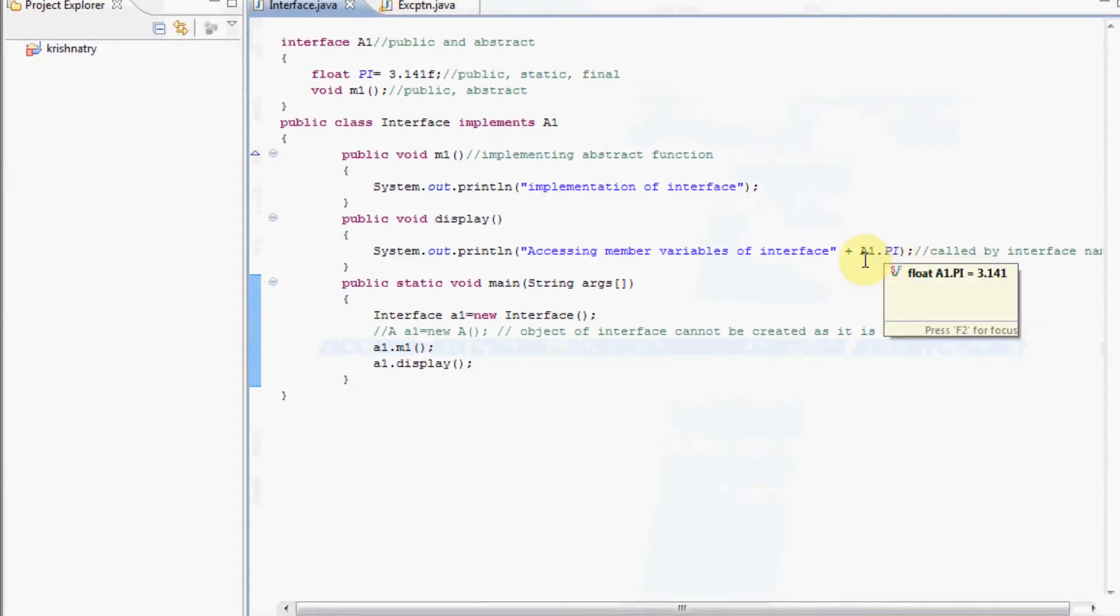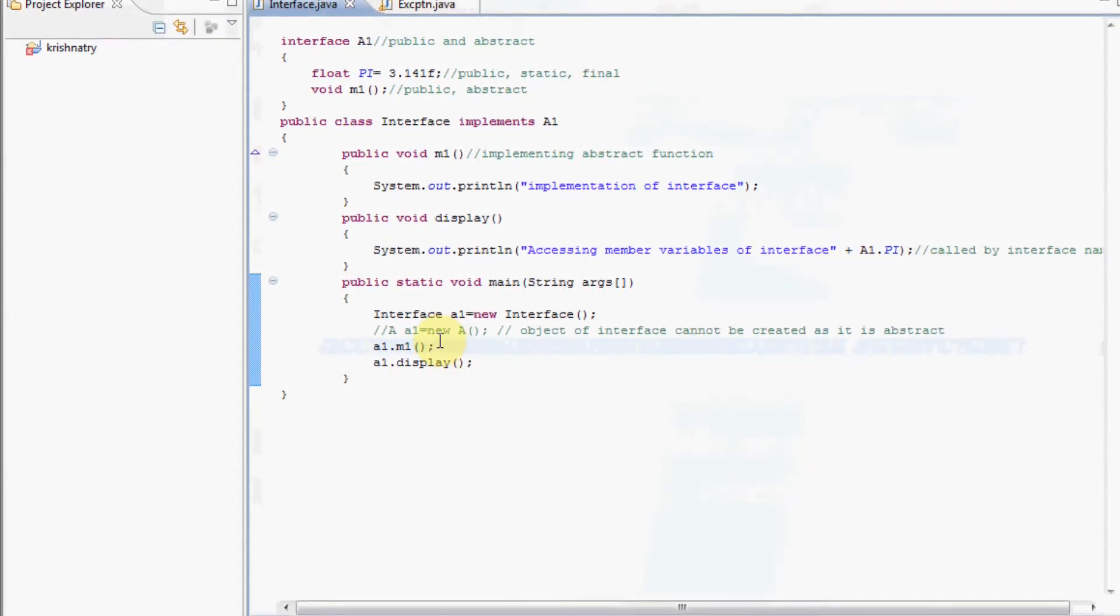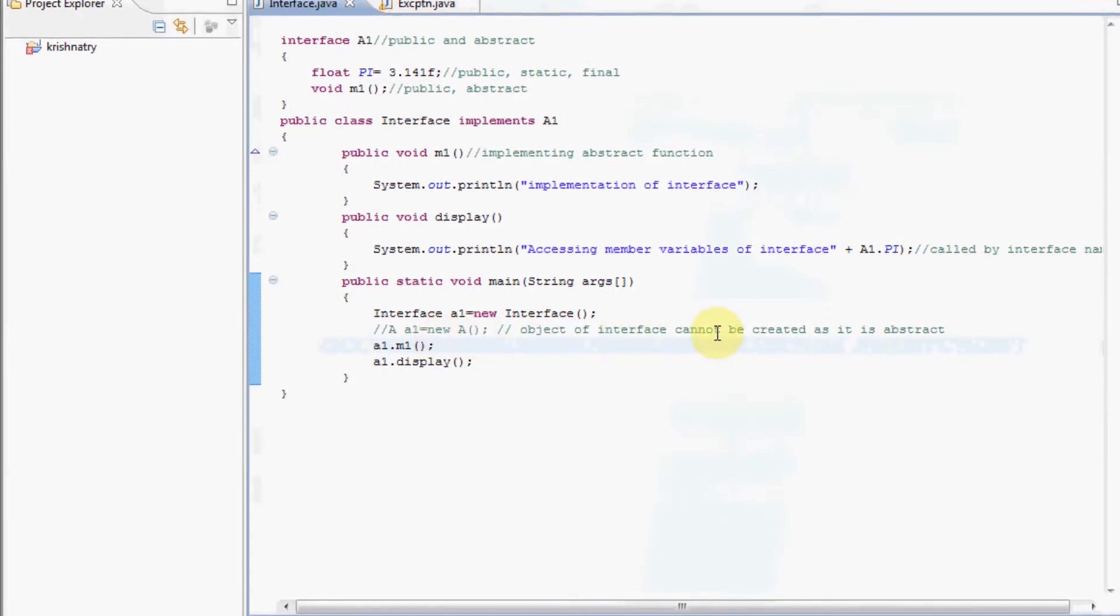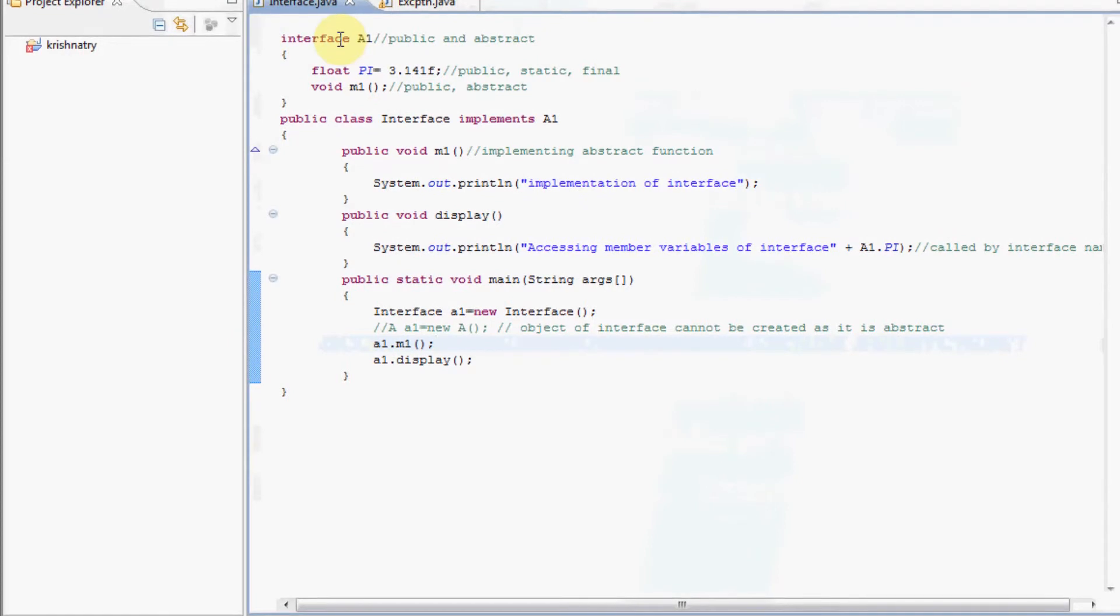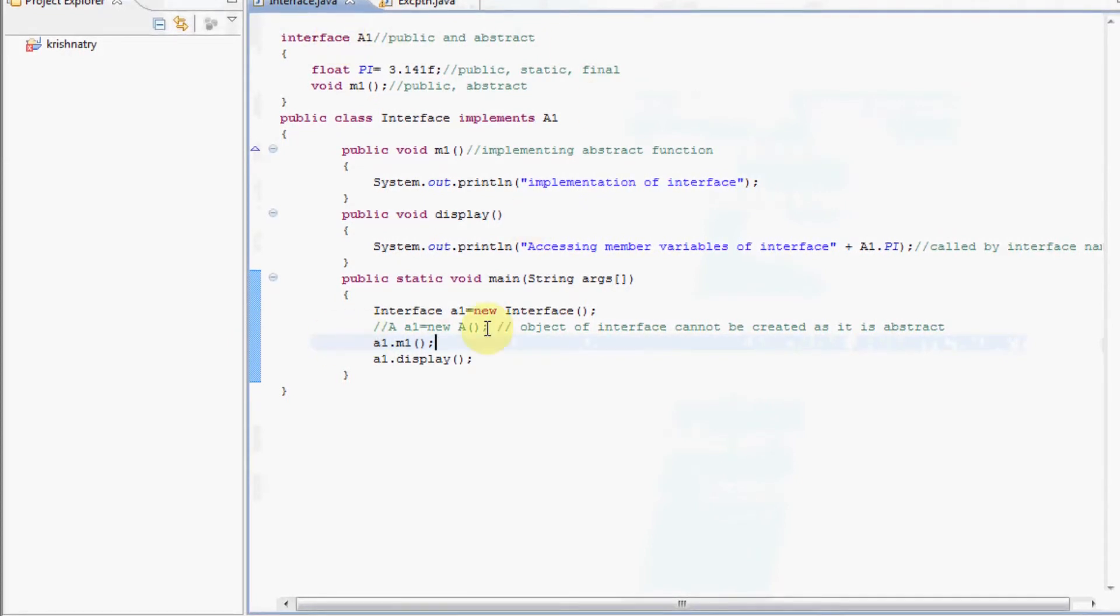We must keep in mind that we cannot create an object of an abstract class. Since interface is an abstract class, we cannot make an object.